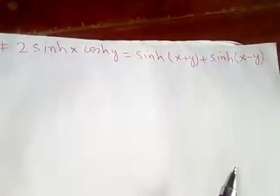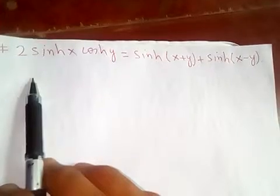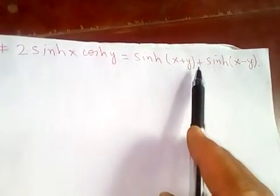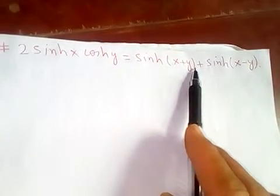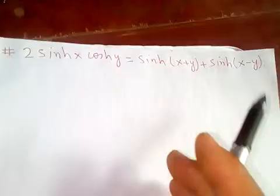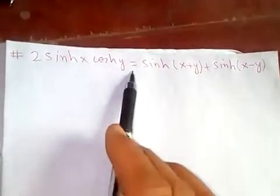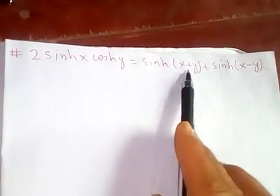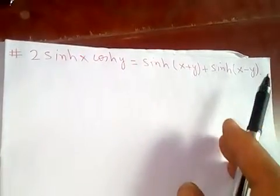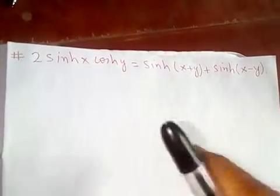Thanks for watching my video. Today I'm going to prove a sum-to-product identity: 2·sinh(x)·cosh(y) = sinh(x+y) + sinh(x-y).